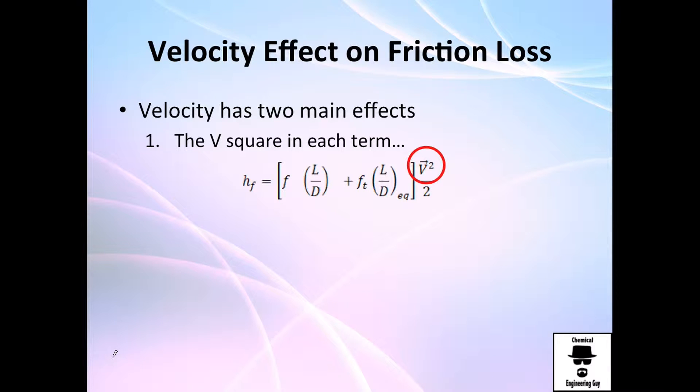So guys, we're almost done with the friction loss chapter or block. I just want you to do this little analysis on velocity effect. So I will tell you before, this is the wall friction parameter, and this is the fitting or valve friction parameter. Okay, and it must be multiplied by the velocity to the square divided by 2.